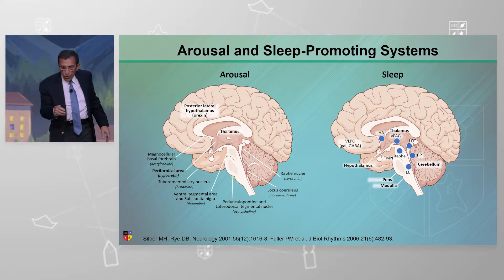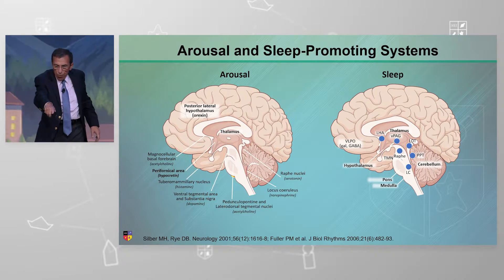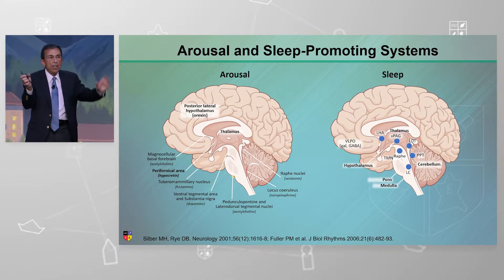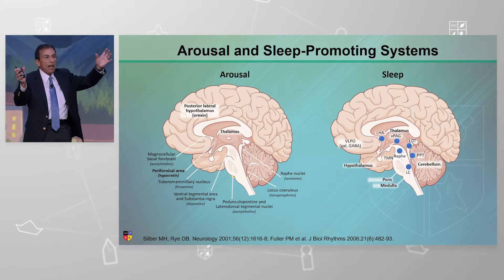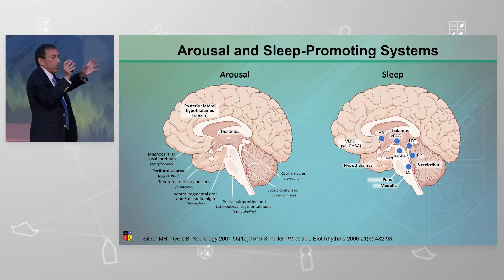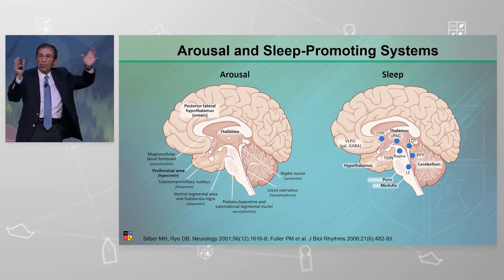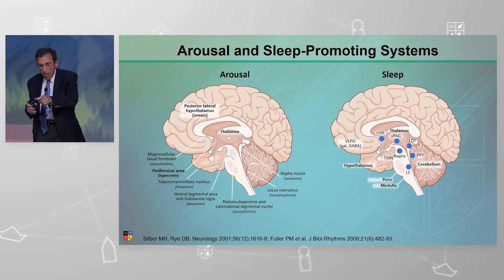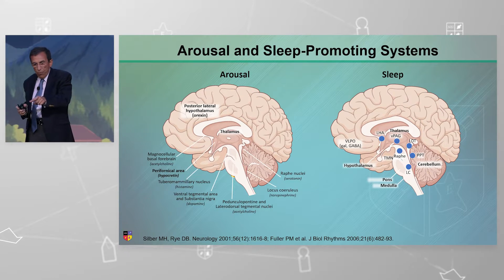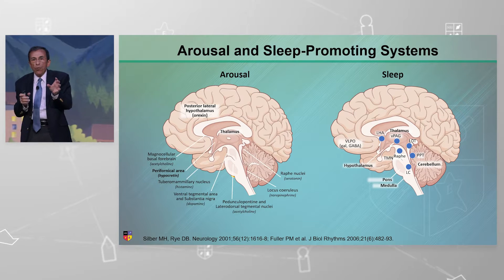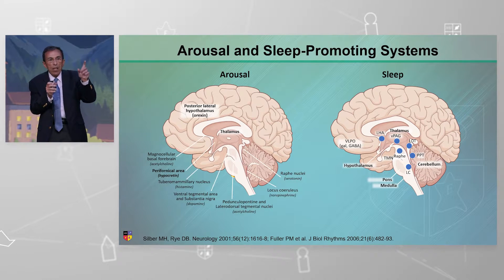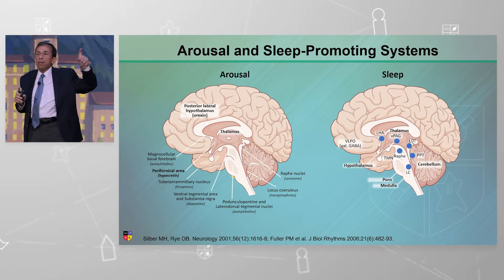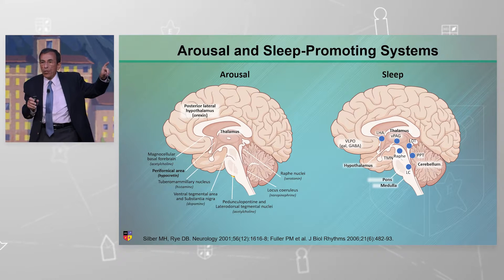That's the waking system. You'll see something like hypocretin — hypocretin is synonymous with orexin. These are two different labs that described this same neurotransmitter system separately and called it different names. Same thing. Hypocretins, orexins — same thing. The hypocretin system in the hypothalamus is responsible for not just keeping people awake, but also making sure they don't fall asleep.